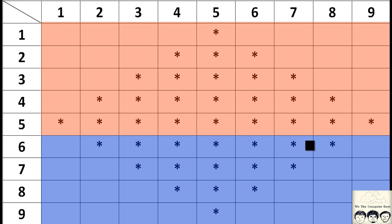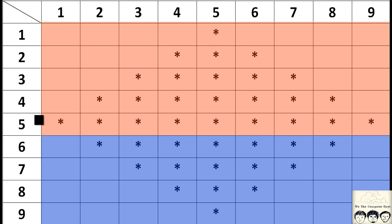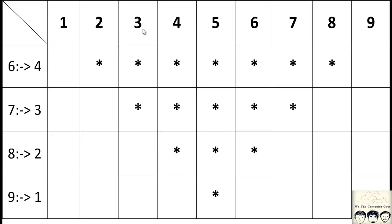When taking input from the user, we ask how many rows they want. We use that number as the starting part: if they say 5 rows, the upper triangle has 5 rows and the lower triangle has 4 rows. If the upper triangle has 4 rows then the lower triangle will have 3 rows. That is how we will be implementing the code.